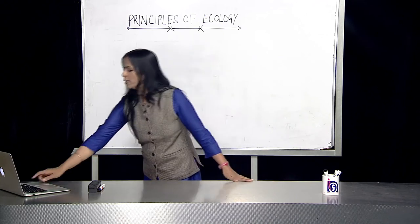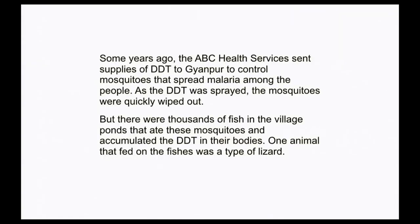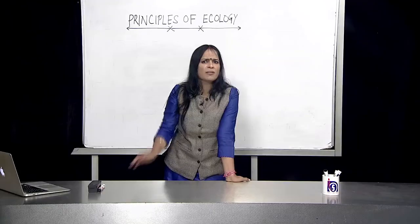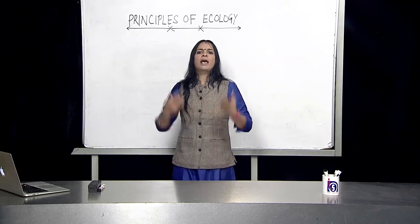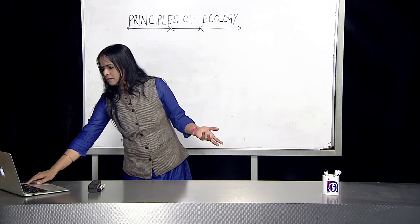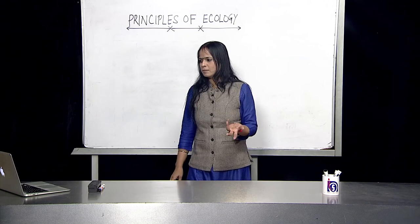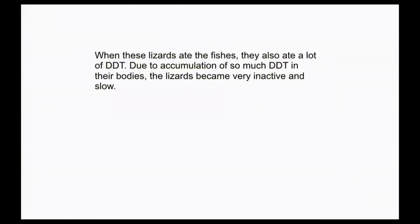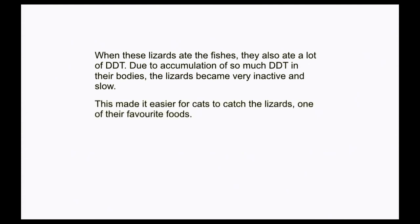So malaria would have gone, hopefully. But what happened next? The city had a pond nearby. The mosquitoes died, but remember, mosquitoes are also somebody's food — they were being eaten by the fishes. The fishes started eating the mosquitoes and therefore also started eating DDT. What would DDT do to the fishes? Well, the fishes became very slow — like if we get poison in our body, we go slow or may even get killed. Lizards also became very slow. When lizards were slow, it became very easy for the cats to catch them, because lizards were their food.